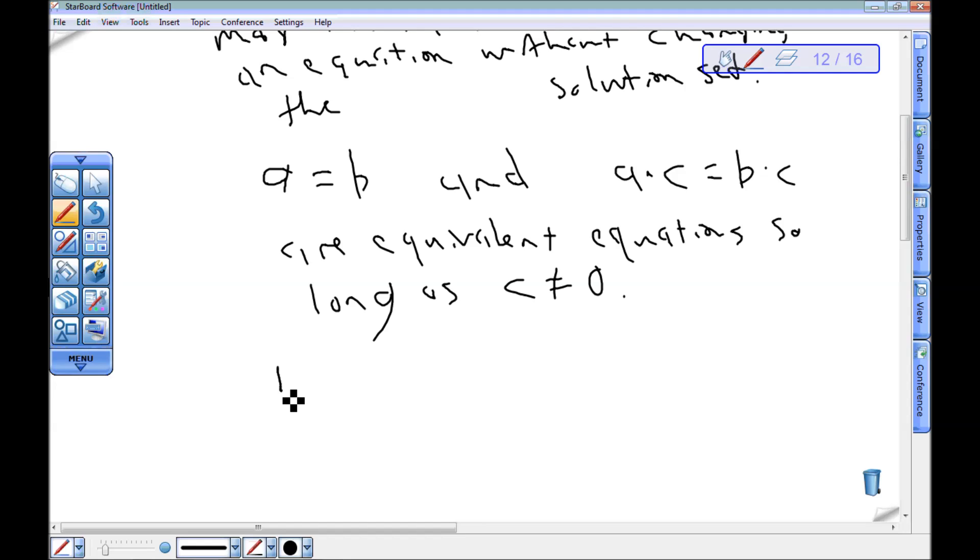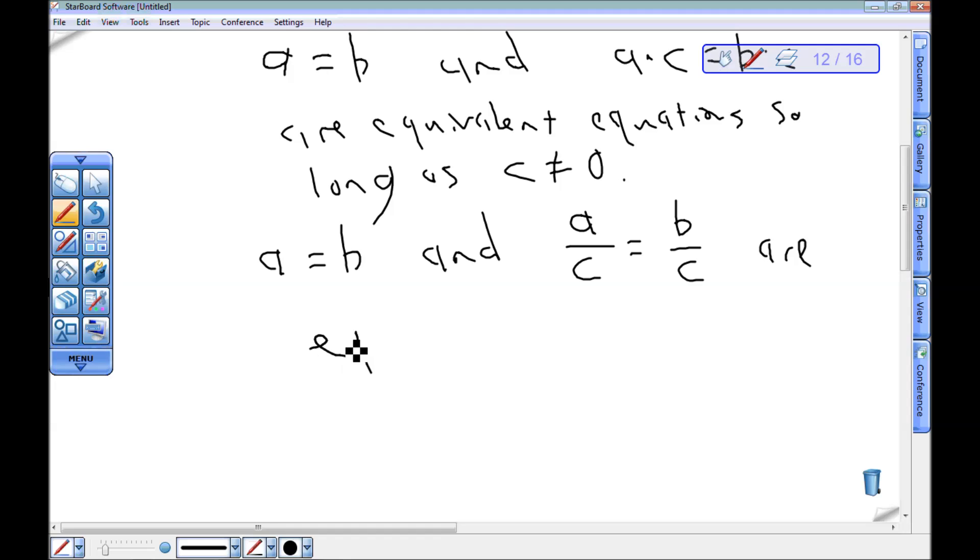Similarly, since I can divide by a number by multiplying by its reciprocal, so long as that original number isn't zero, a equals b and a divided by c equals b divided by c are equivalent equations, so long as c is not equal to zero.